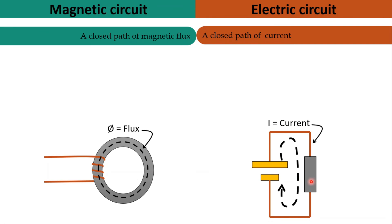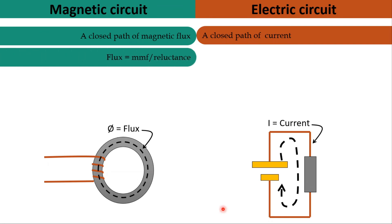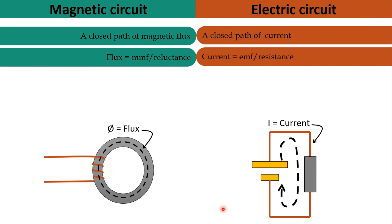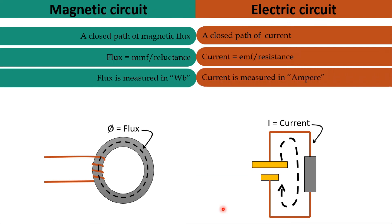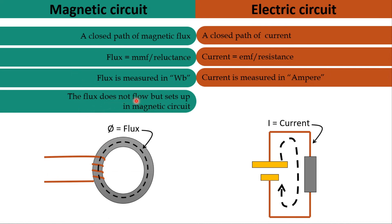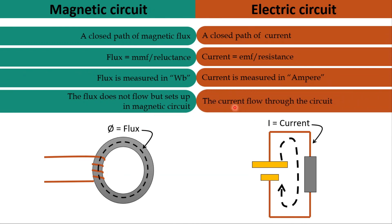In a magnetic circuit, flux is equal to MMF divided by reluctance. Similarly, in an electrical circuit, electric current is equal to EMF divided by resistance. Flux is measured in Weber, whereas electric current is measured in ampere. The flux does not flow but sets up in the magnetic field, whereas electric current flows through the circuit.